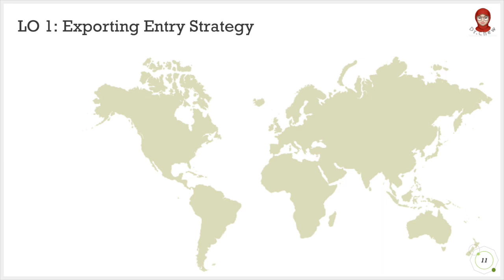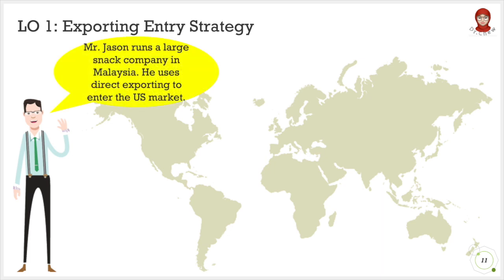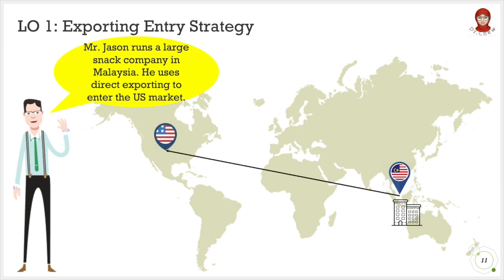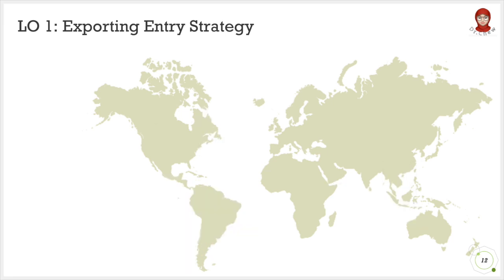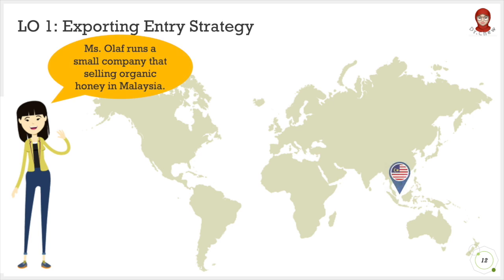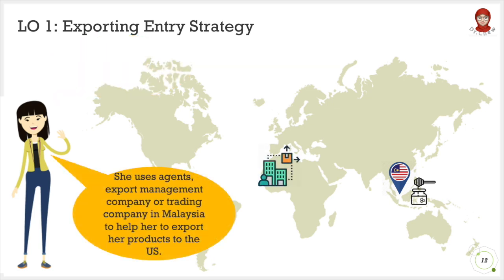Here is an example of direct export. Mr. Jason runs a large snack company in Malaysia. He uses direct exporting to enter the US market, using local representatives and distributors in the US to sell his product directly to American customers. For indirect export, Ms. Olaf runs a small company selling organic honey in Malaysia. She uses an agent, export management company, or trading company in Malaysia to help her export her products to the US. The key difference is whether the intermediaries are in the home country versus in the foreign host country.